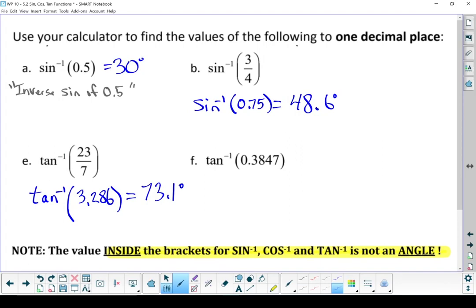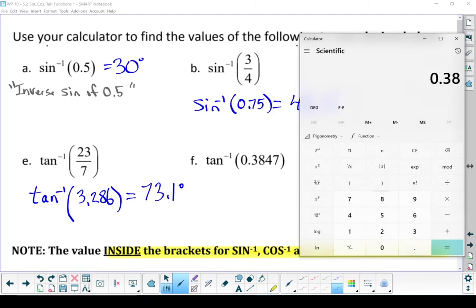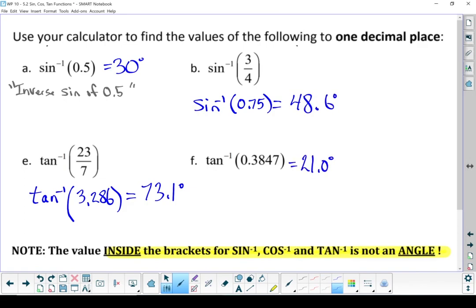And last, what's the inverse tan of 0.3847? Second function tan. One decimal place, 21.0. So that's how to calculate the trig functions and the inverse trig functions.